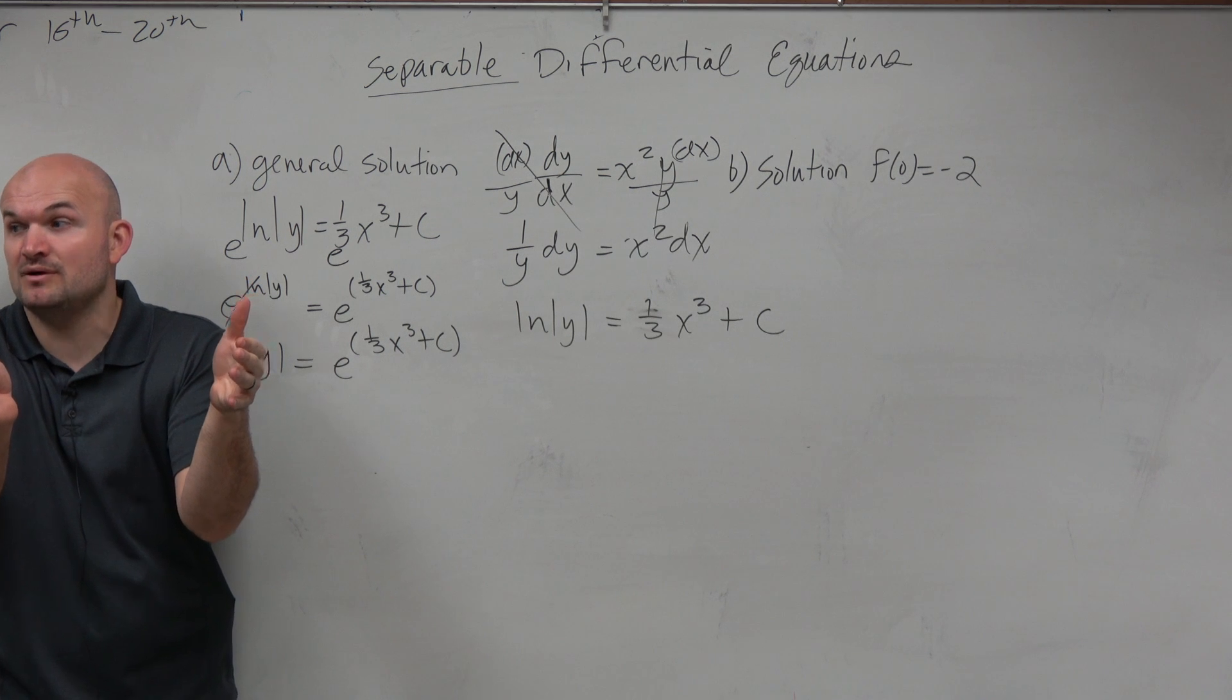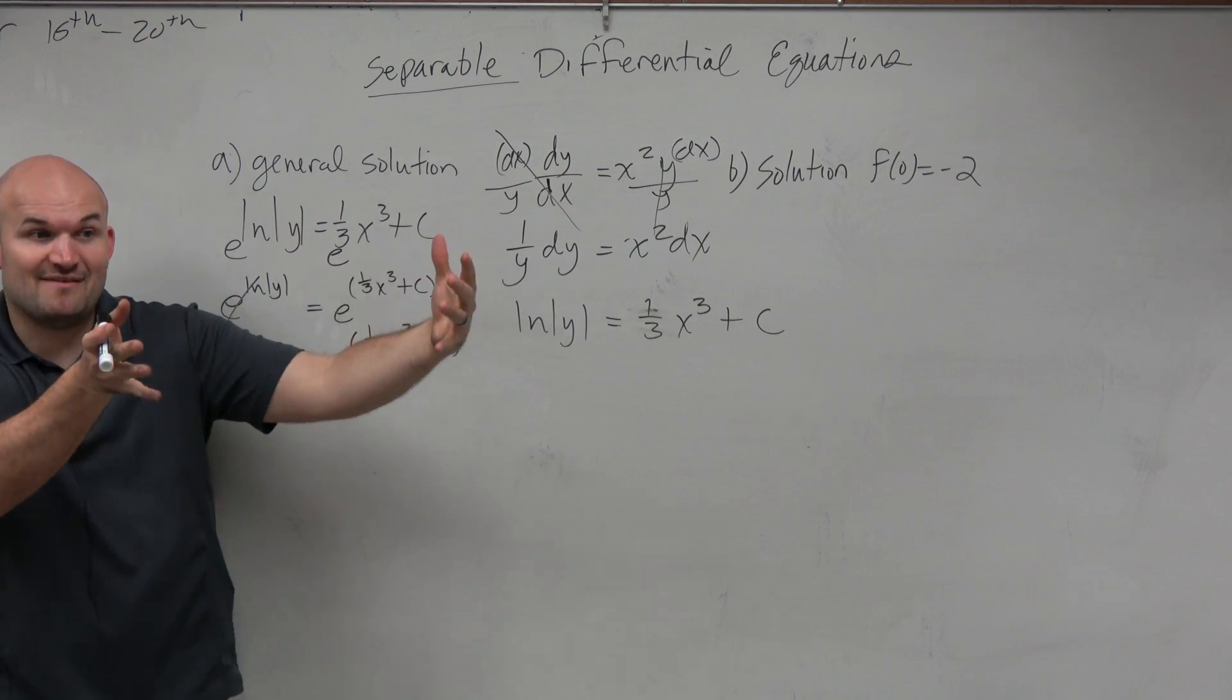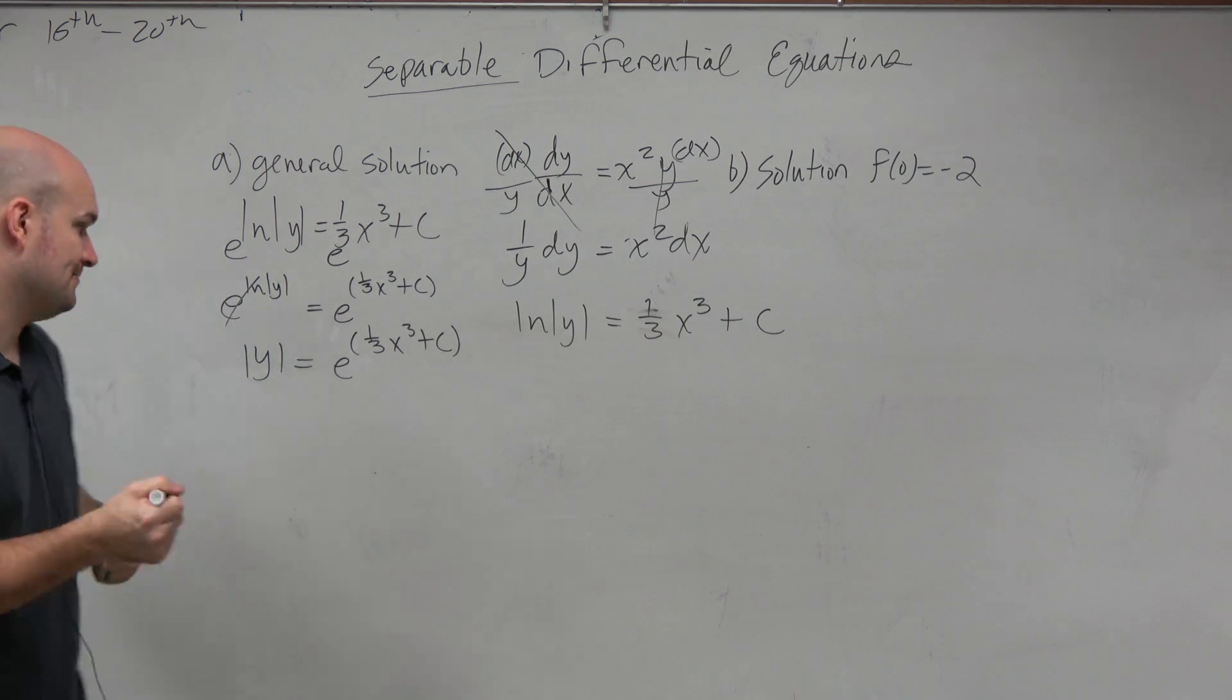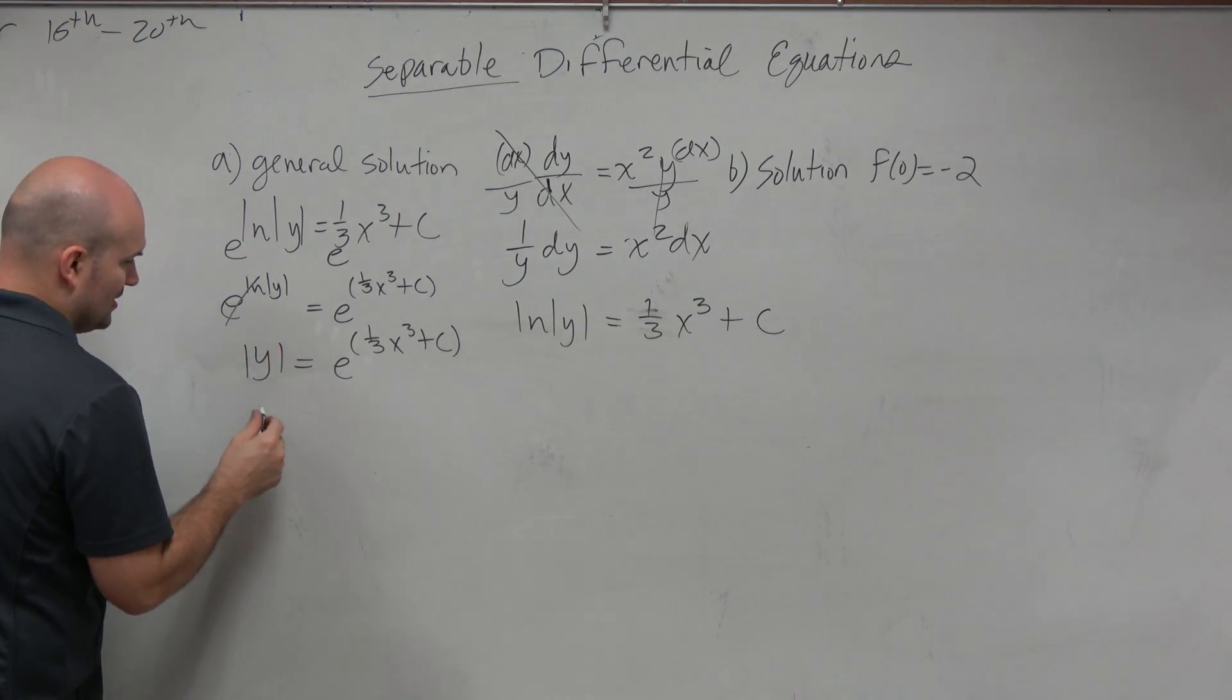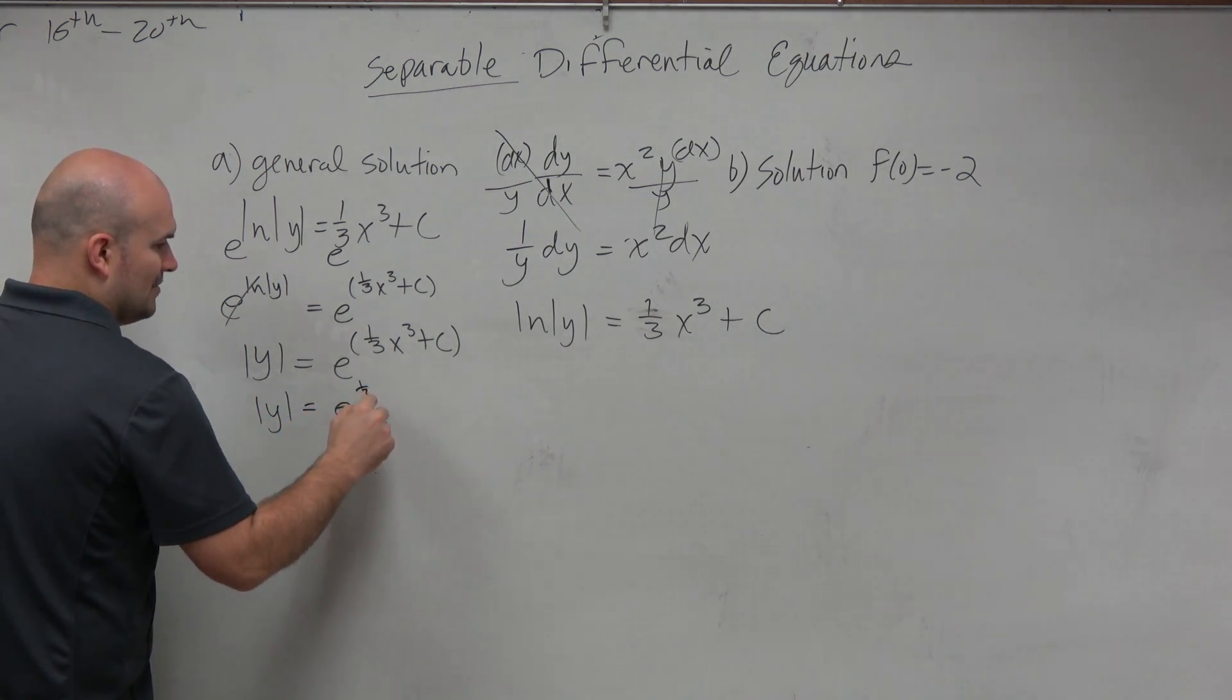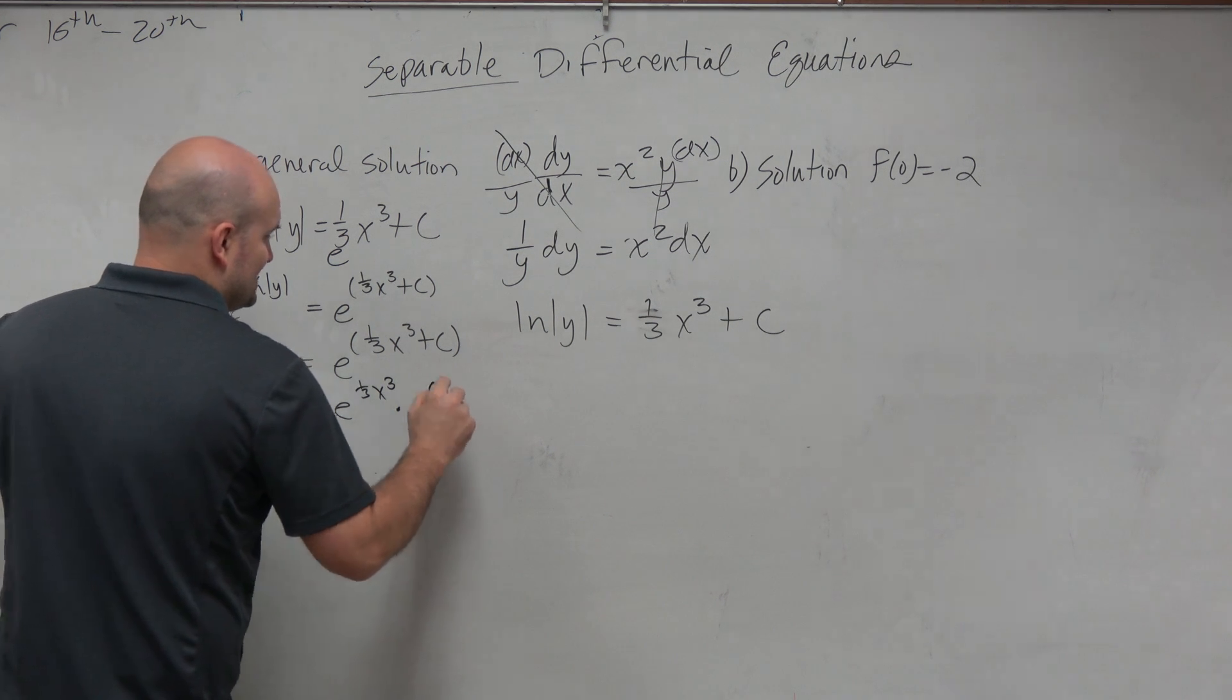Multiplying exponents makes you add powers. So if I have adding powers, could I just rewrite that back as a multiplication problem? Yes. OK. Now, this is the cool part. So we have absolute value y. That didn't really help us with that. e to the 1/3 x cubed times e to the c. Everybody agree, if you were to multiply these, you'd get to that, right?